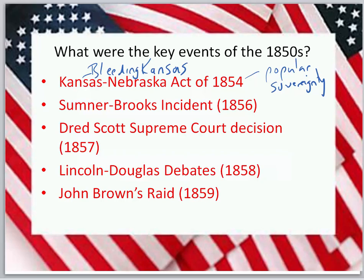Bleeding Kansas is when border ruffians from Missouri came into Kansas to vote, and so did radical abolitionists like John Brown from New England, and fighting ensued. The Sumner-Brooks incident is when Charles Sumner, congressman from Massachusetts, gave a very detailed and critical speech in Congress against slavery, in which he was critical of one of Preston Brooks' relatives. Preston Brooks returned to work a day or two later and hit Sumner repeatedly with a cane, sending him to the hospital. Sumner was out of work for about three years. Brooks was from South Carolina, and many of his constituents sent him gifts, including canes engraved with the words 'way to go, hit him again' — another example of how tensions were mounting.